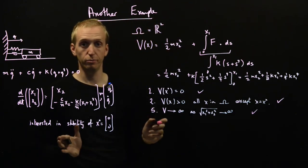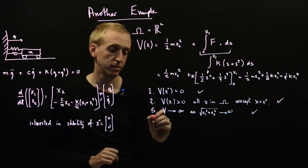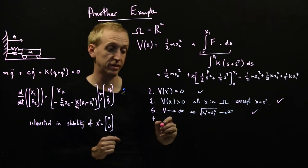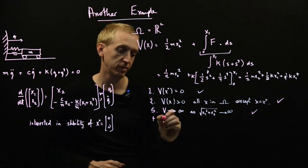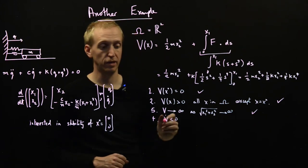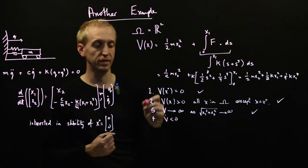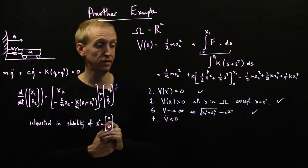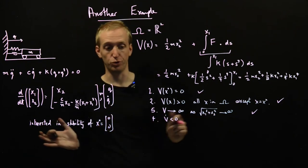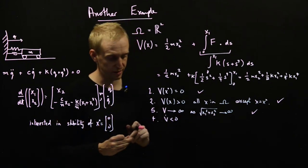So good. All that remains is to get global asymptotic stability we need V dot is less than 0. Remember 0.3 was just for stability and that was less than or equal to. So this is our final point left for global asymptotic stability.